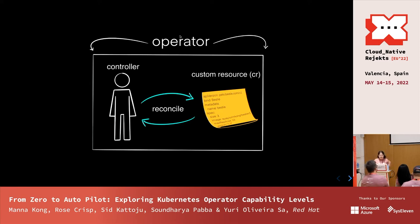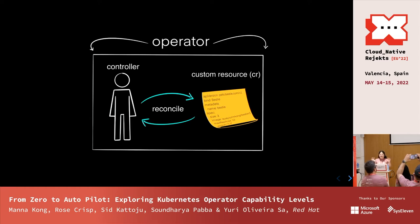A controller is a control loop that watches the state of the current cluster and tries to bring it closer to the desired state declared in our custom resource. Operators have different maturity levels — capabilities can range from basic installation to complete autopilot. We want to sit back and let it do everything for us.